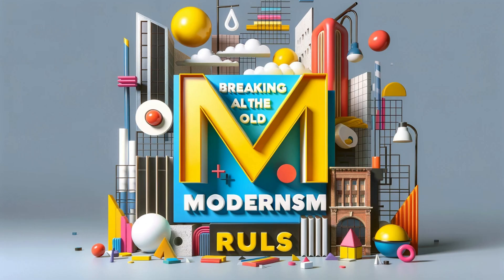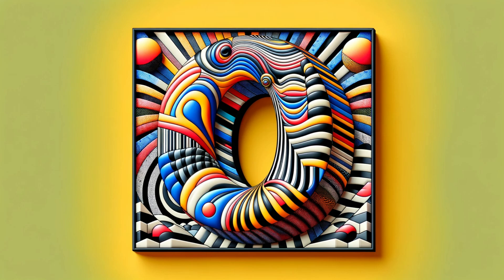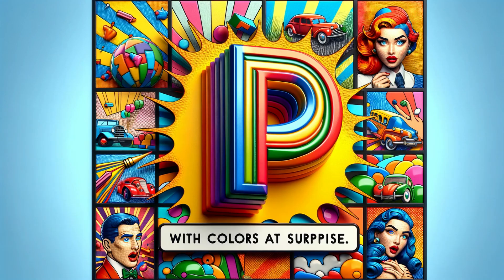M is for Minimalism, breaking all the old rules. N is for neoclassicism, with order and classical tools. O is for op art, playing tricks on our eyes.